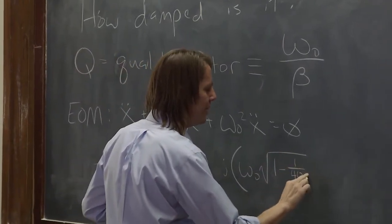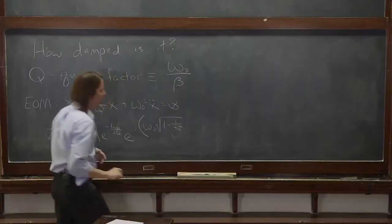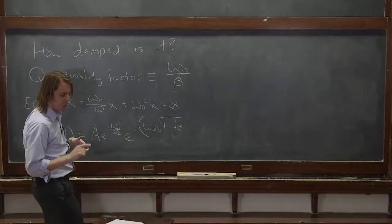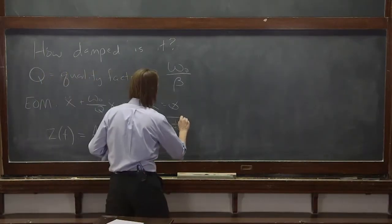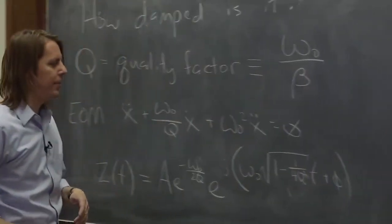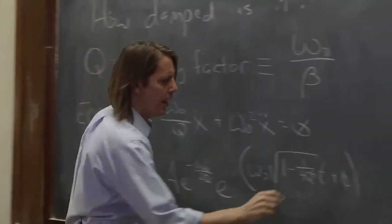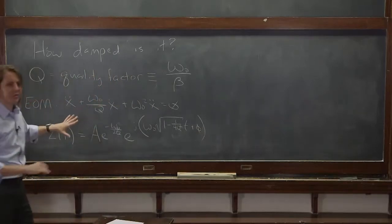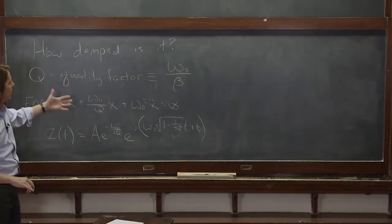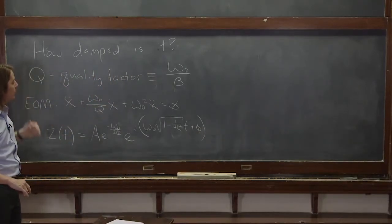Since I'm not doing this live, I'm having to look it up because I haven't memorized 1 minus 1 over 4Q squared T plus phi. So exact same equations, just we are rewriting them in terms of Q instead of beta.